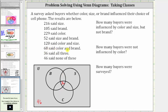Next, 68 said color and brand, and therefore there are 68 buyers in the intersection of set C and set B, which is this set here. Notice how there are already 36 buyers in that set, and since 68 minus 36 is 32, there are 32 buyers in this region — representing buyers influenced only by brand and color, while the 36 are influenced by brand and color but also size.